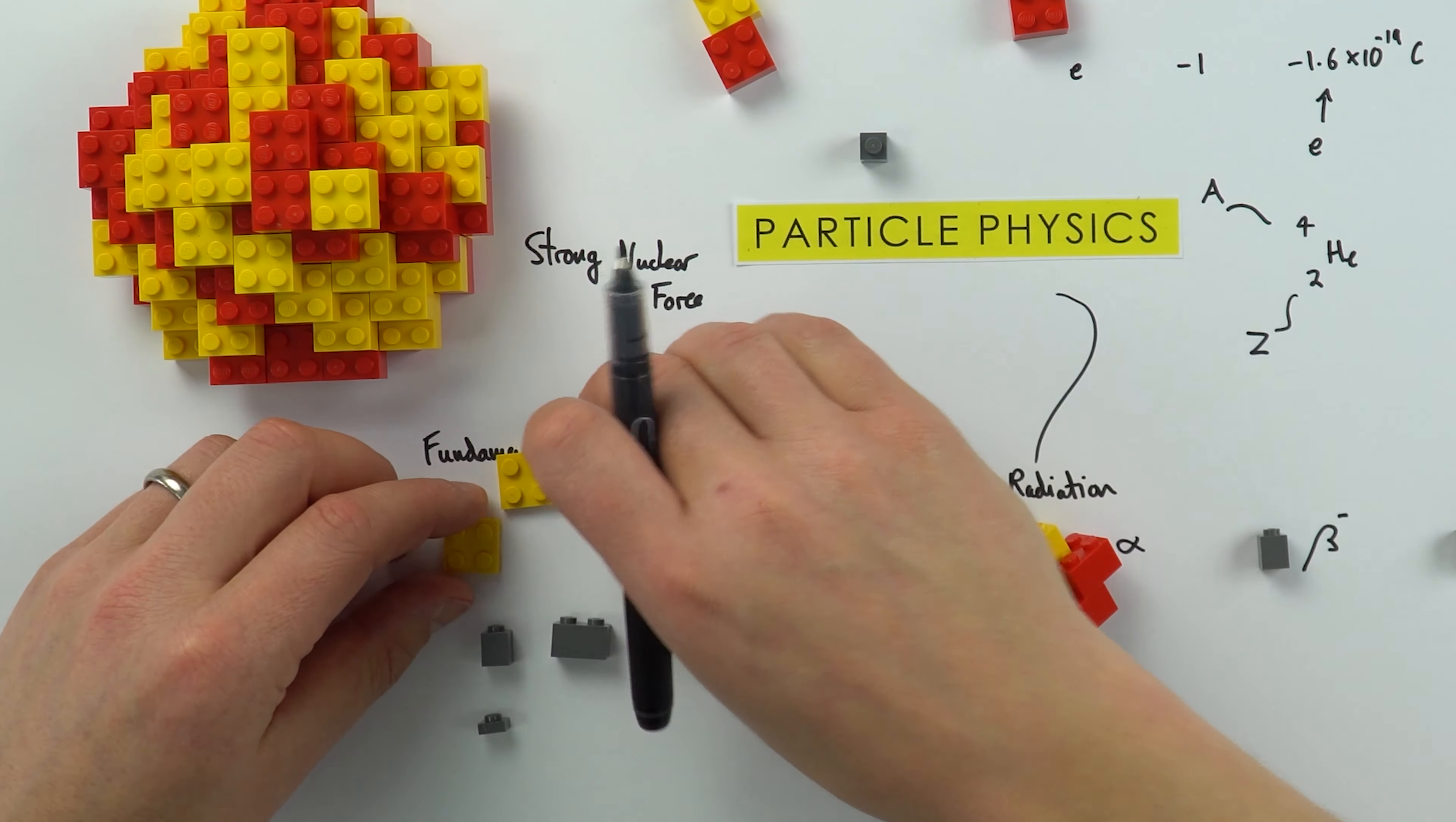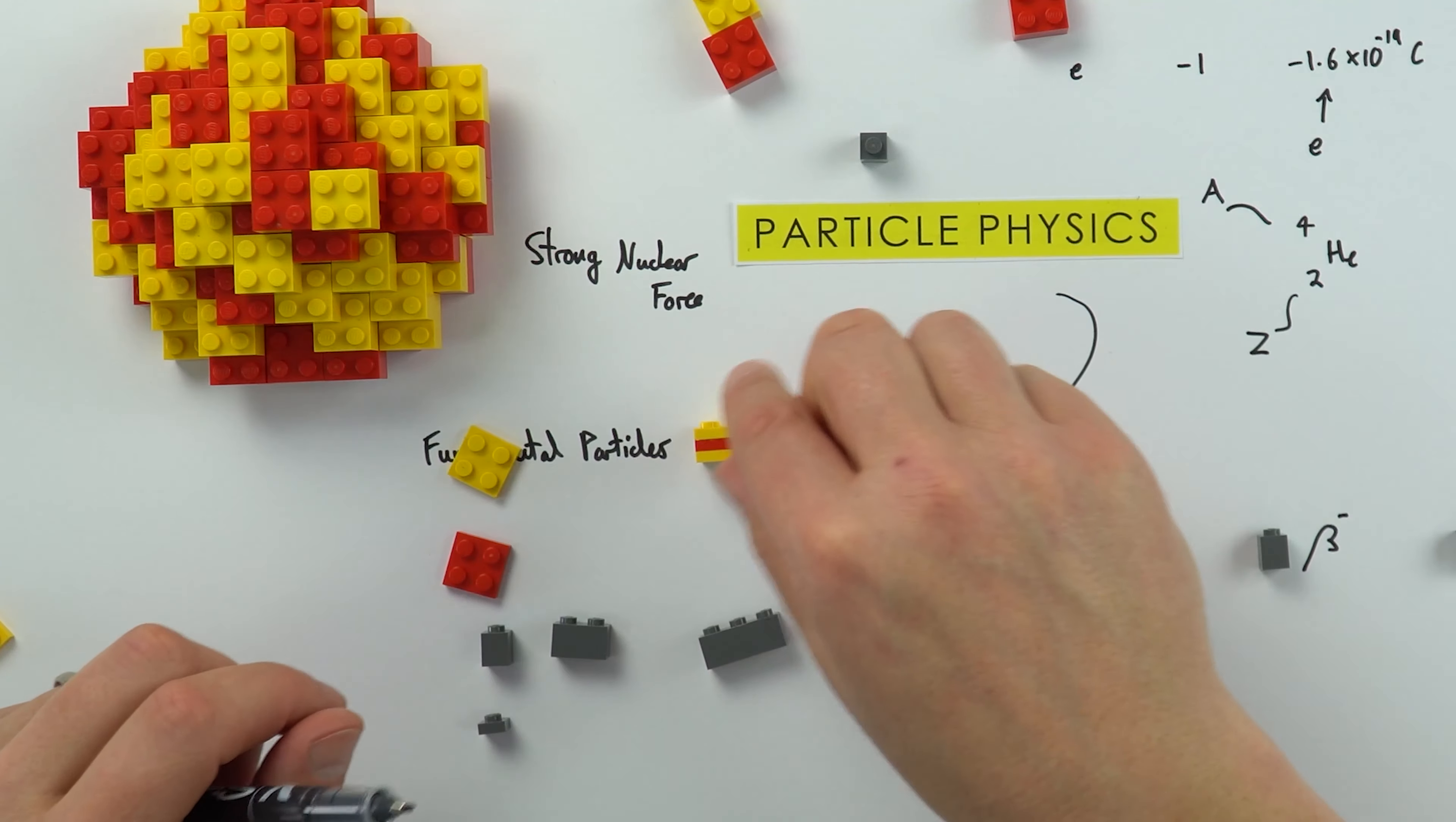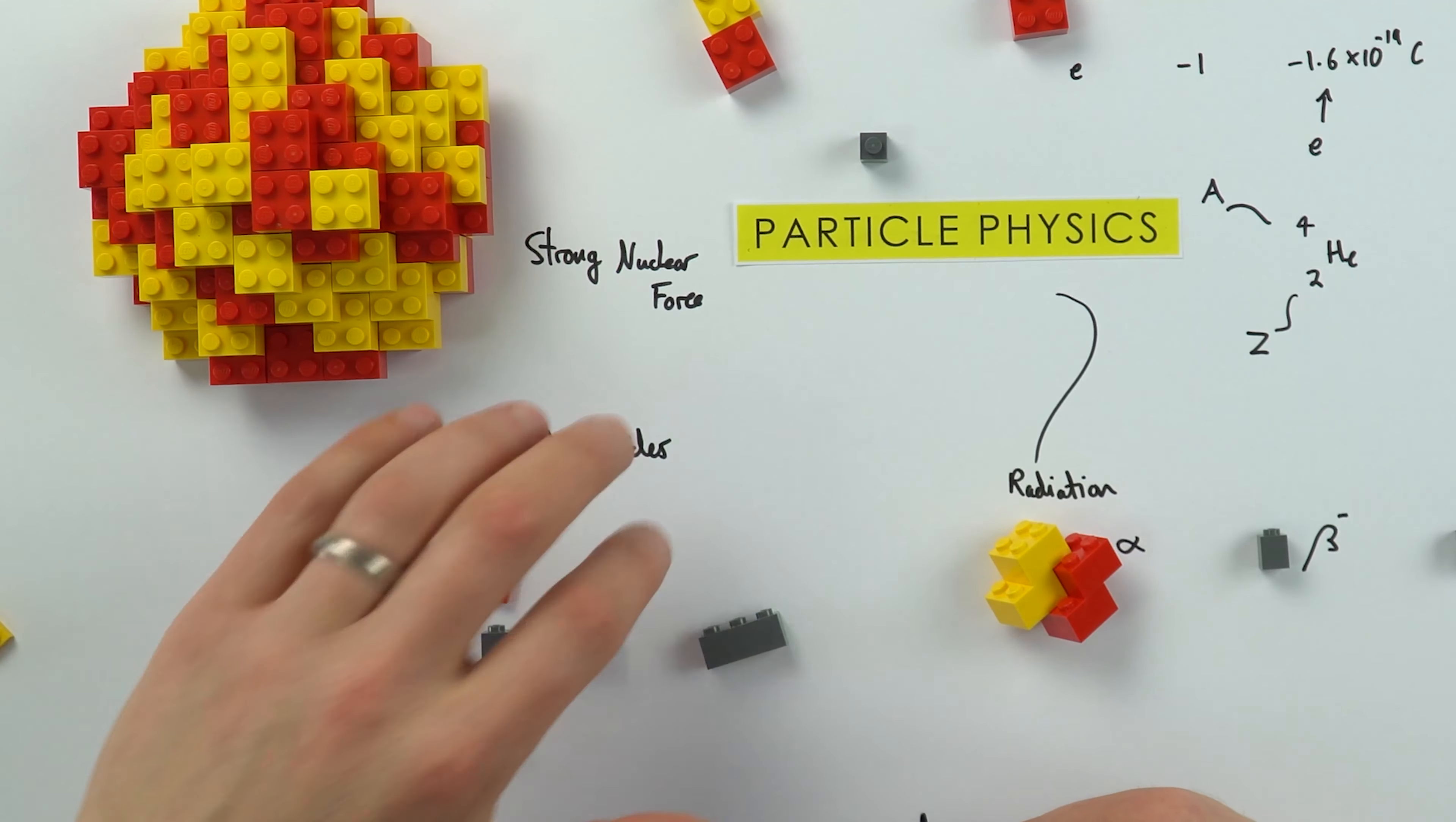Basically inside protons and neutrons we have a different combination of quarks. Inside a proton we have two up quarks and a down quark, and that makes our proton. Inside a neutron we have an up and two downs, and that makes our neutron. So we can split neutrons and protons apart, but we can't split quarks apart. So at the moment, and there's different sorts of quarks, these are what we call our fundamental particles. This is the kind of thing that we're going to develop our knowledge of as we go into A level physics.